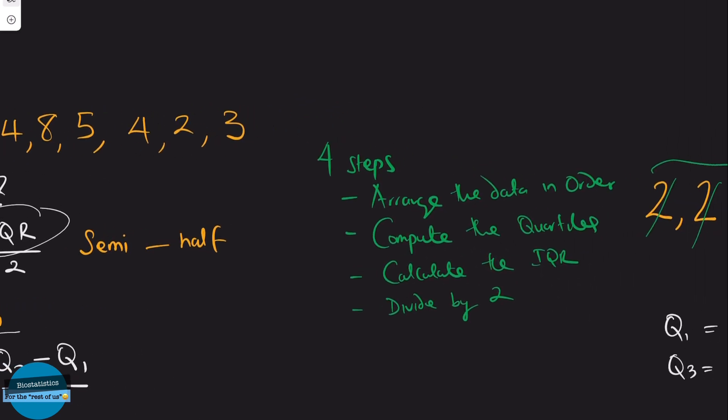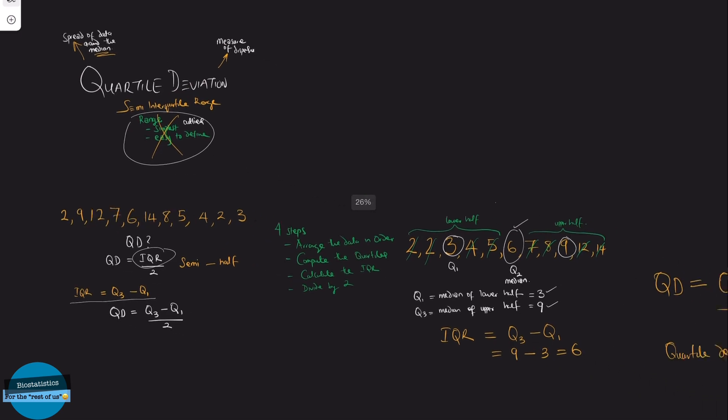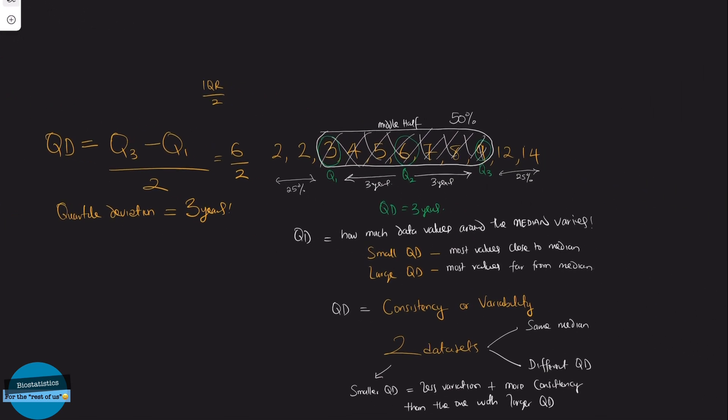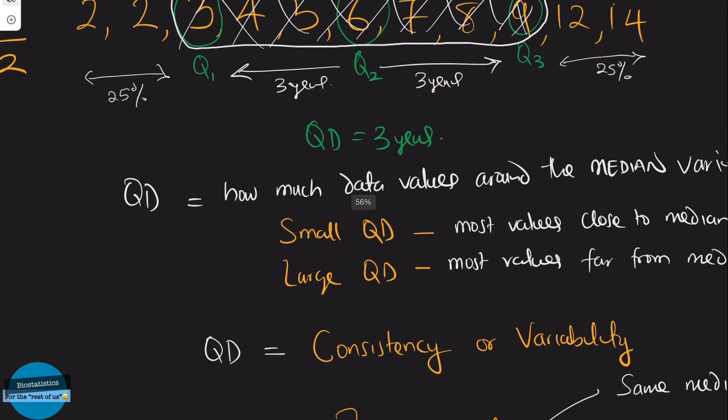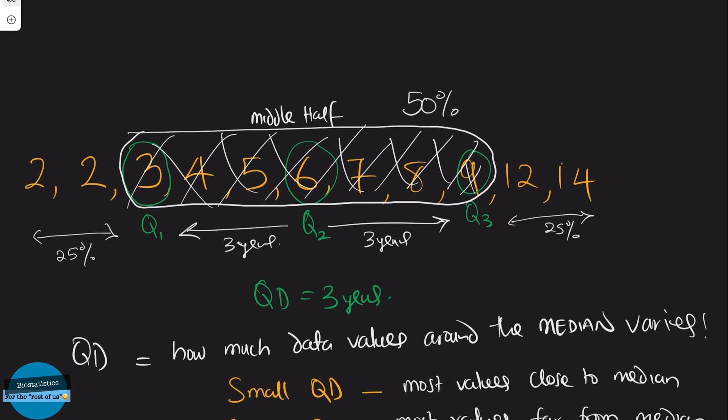And calculating the interquartile range minimizes the instability of the range as it only measures the spread of the middle 50% of the values in the data set, excluding the outliers or excluding any possible outliers. While the quartile deviation, also known as the semi-interquartile range, then tells us specifically how the middle 50% of the data are dispersed around the median. So in the case of our data, we can say the middle 50% of our data is within three years of the median.